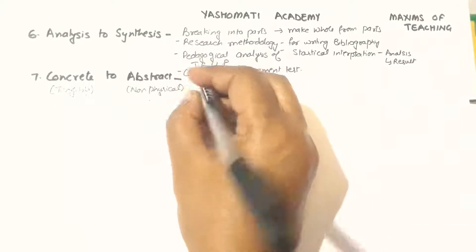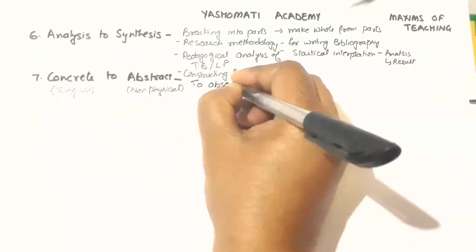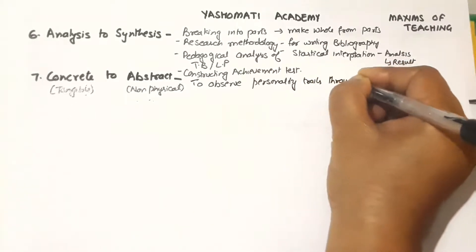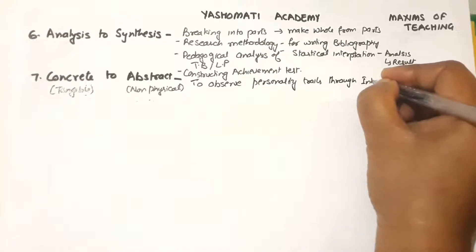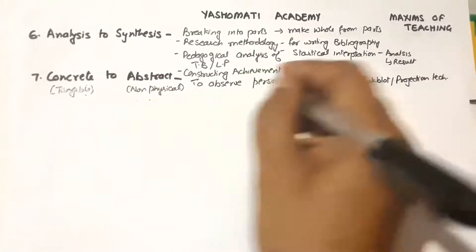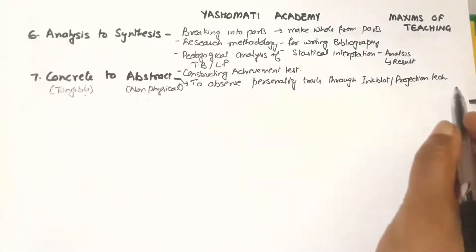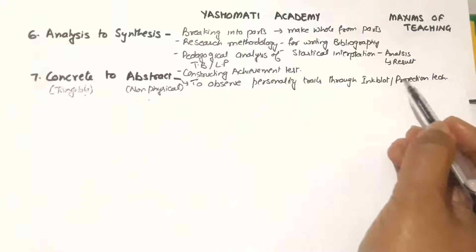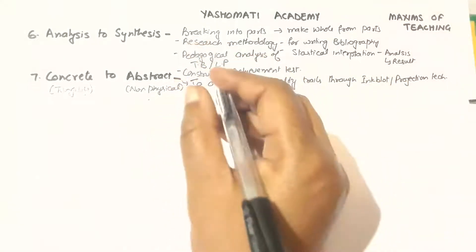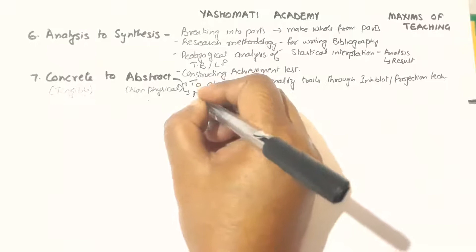It is also used to observe personality traits through ink blot or projection technique. This is just one example — there can be many more. The point is that personality being abstract, and ink blot and projection technique being tangible, this maxim is used to observe abstract aspects of the learner. It also helps us understand the need and importance of the use of demonstration.